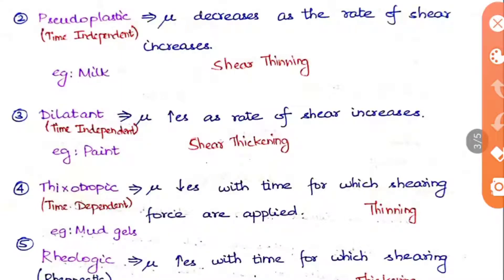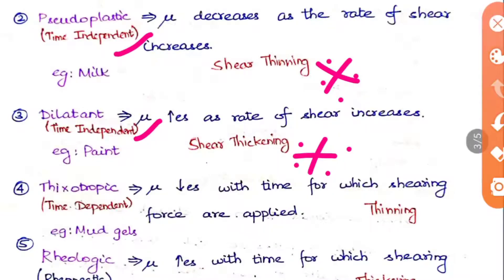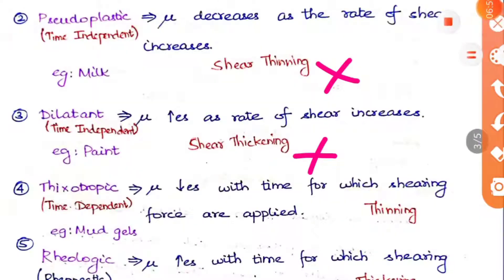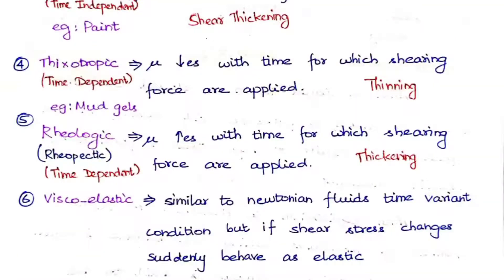For pseudo-plastic, mu (viscosity) decreases as the rate of shear increases — it is inversely proportional, so we call it shear thinning. For dilatant fluid (also time-independent), mu increases as rate of shear increases, so we call it shear thickening. For thixotropic fluid, mu decreases with time for which shearing force is applied — it is time-dependent and a thinning agent; examples are mud and shells.